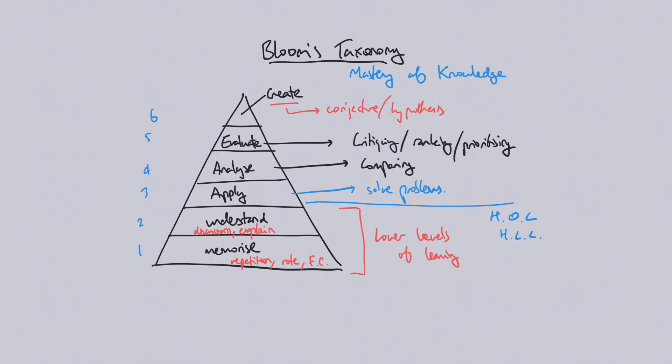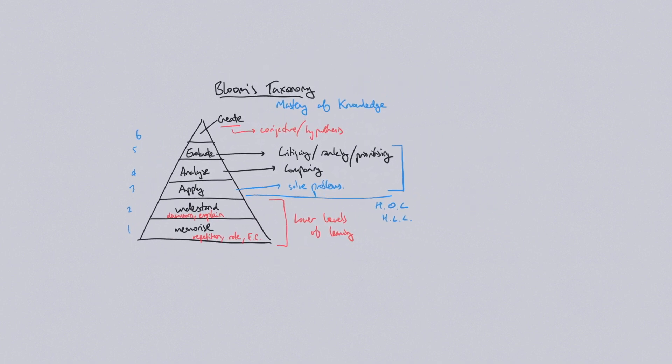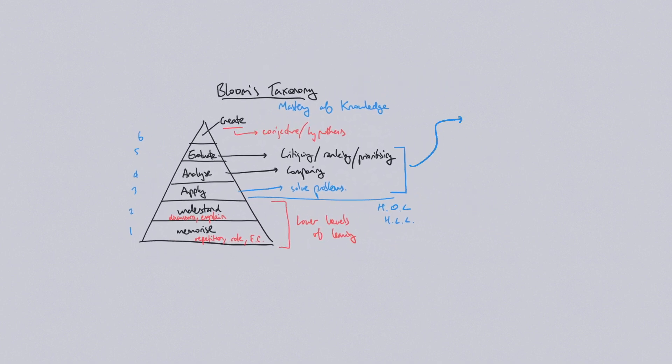However, there is a very distinct advantage in getting to levels three, four and five — apply, analyze and evaluate. When you operate at this level, the first thing you'll notice is that you're able to do level one and level two faster and easier automatically. The brain enters a sort of autopilot: when you're trying to use information to solve a problem or compare information, you will naturally end up memorizing and understanding it more deeply than you would if you tried to directly memorize or understand it.